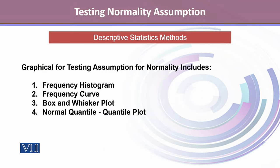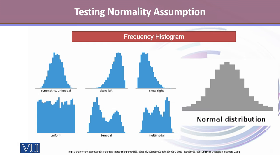In the descriptive statistical method, we will talk about the graphical methods to test the assumption for normality. This includes frequency histogram, frequency curve, box and whisker plot, and importantly, the normal quantile-quantile plot, which is also known as the QQ plot. The very first test that we use to comment about the normality assumption is a frequency histogram.